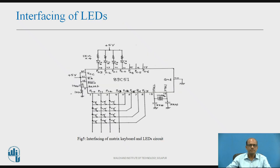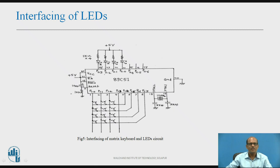For interfacing LEDs: by default when the microcontroller is reset, all IO lines output logic 1, so no LED will glow. To turn on a particular LED, output logic 0 at that port line. The circuit includes a current-limiting resistor in series with the LED. This is the standard method of interfacing LEDs with the 89C51.